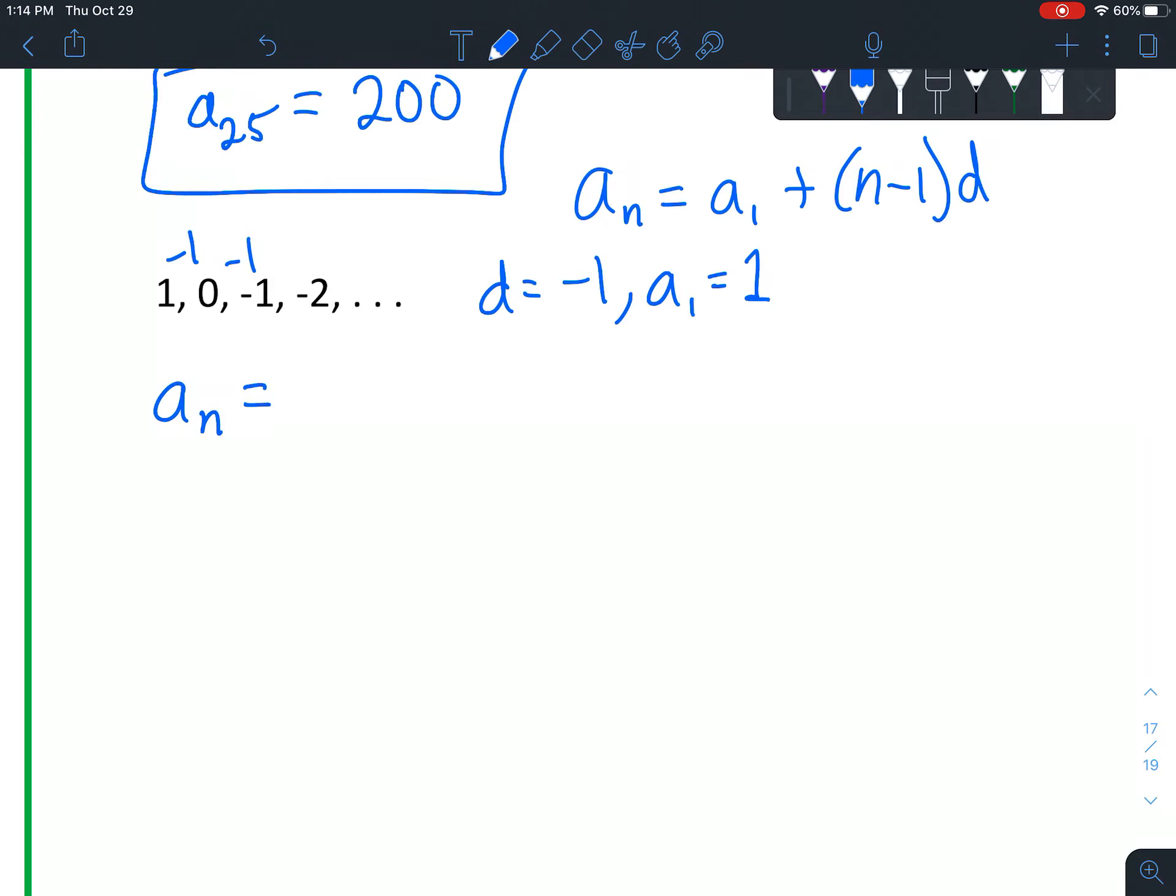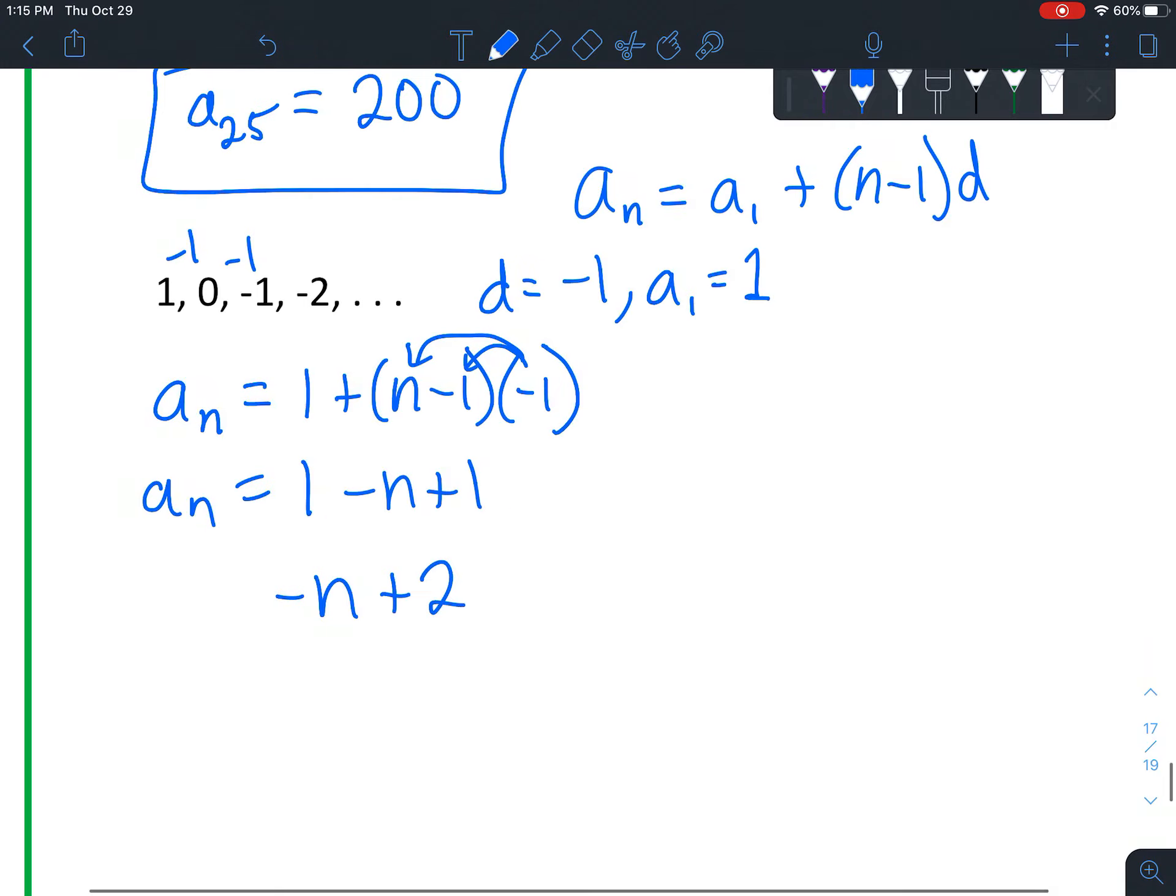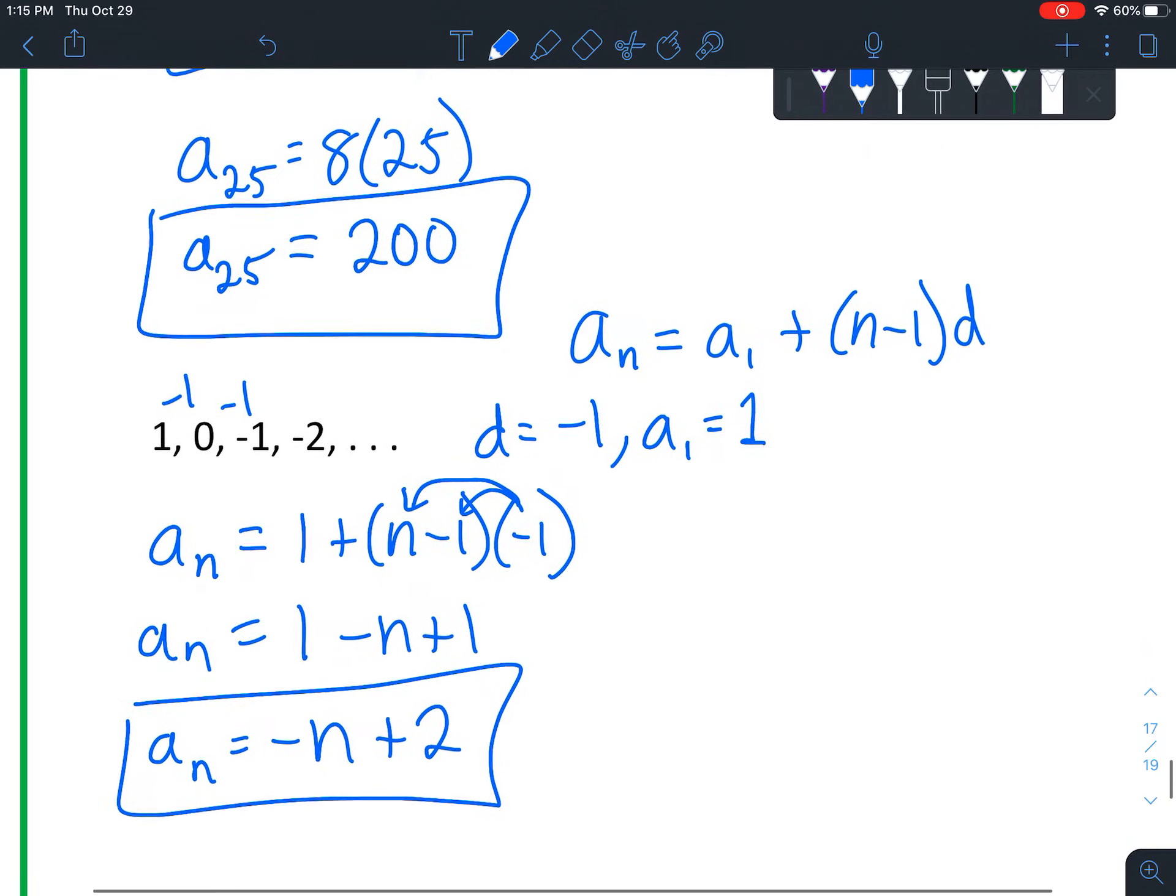So we've got a sub 1 is 1, plus n minus 1. That's always going to just stay like that. D is negative 1. Negative 1 times n is negative n. Negative 1 times negative 1 is positive 1. All right, let's do our simplifying. 1 plus 1 is 2. And let's put this kind of out in front. So it's negative n plus 2. There's our formula.